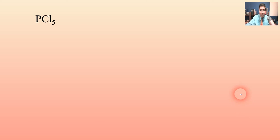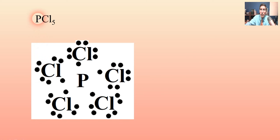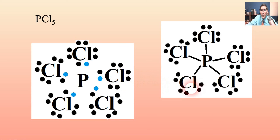Let's try one more example: phosphorus pentachloride. This is interesting because we have more than four atoms branching out from the central atom. Since each single bond has two electrons, having more than four atoms on a central atom means more than eight electrons on that atom — there's just no way around it, so we have to break the octet rule. Every chlorine gets seven dots according to the periodic table, and phosphorus gets five because it's in group 15.